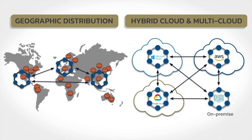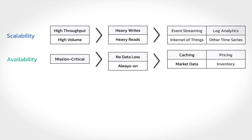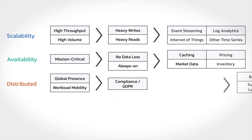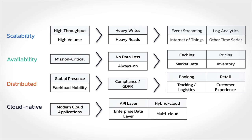Cassandra fits a pretty wide range of use cases: scalability where high-throughput and high-volume applications are needed; mission-critical cases where you need to ensure the database will be available in case of outages; globally distributed to get data close to users and handle different security requirements around the globe; or able to deploy across any cloud platform or on-prem. If any of these apply, Cassandra is probably a solid fit.